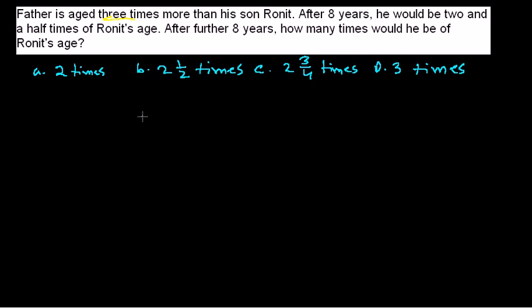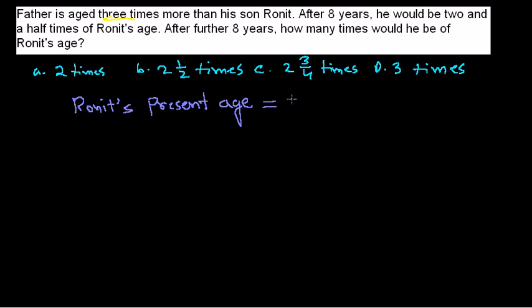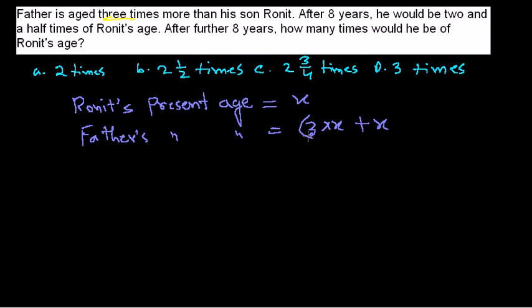We don't know the age of Ronit or his father, so everything is unknown. We need to assume something. Let's assume Ronit's present age equals x. Since the father is aged three times more than his son, his father's present age will be three times Ronit's age plus Ronit's age itself, giving us 3x + x, which equals 4x.